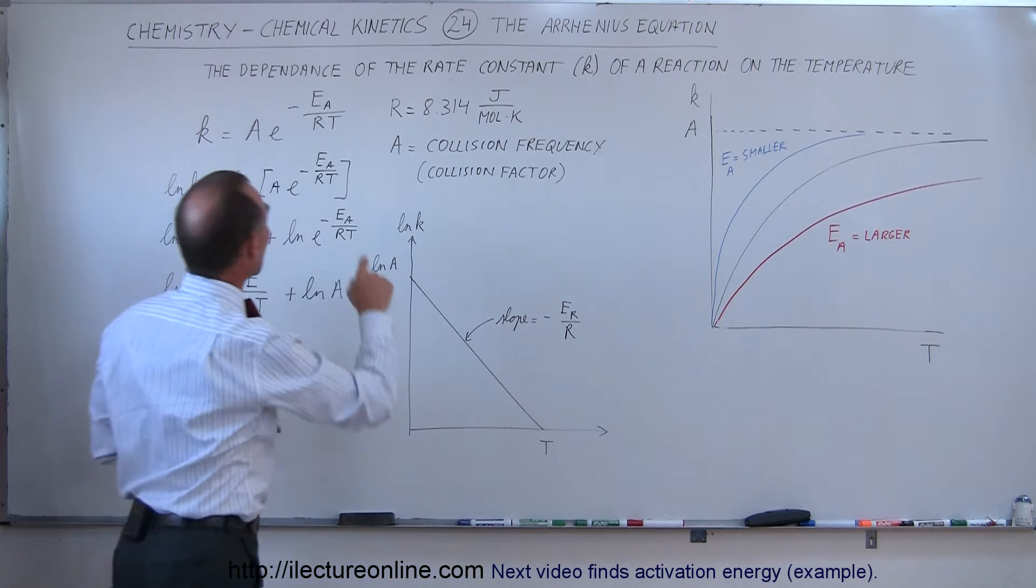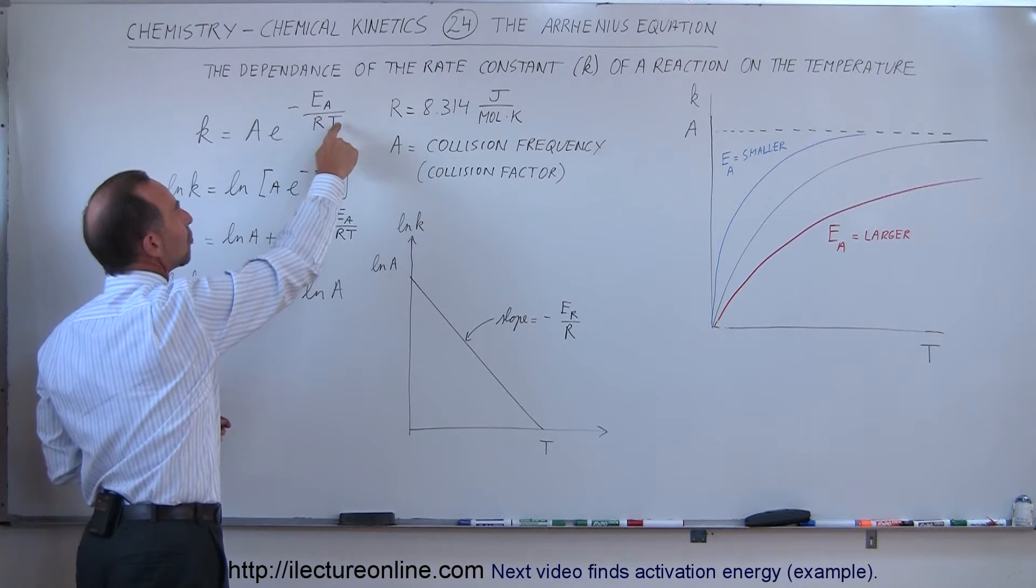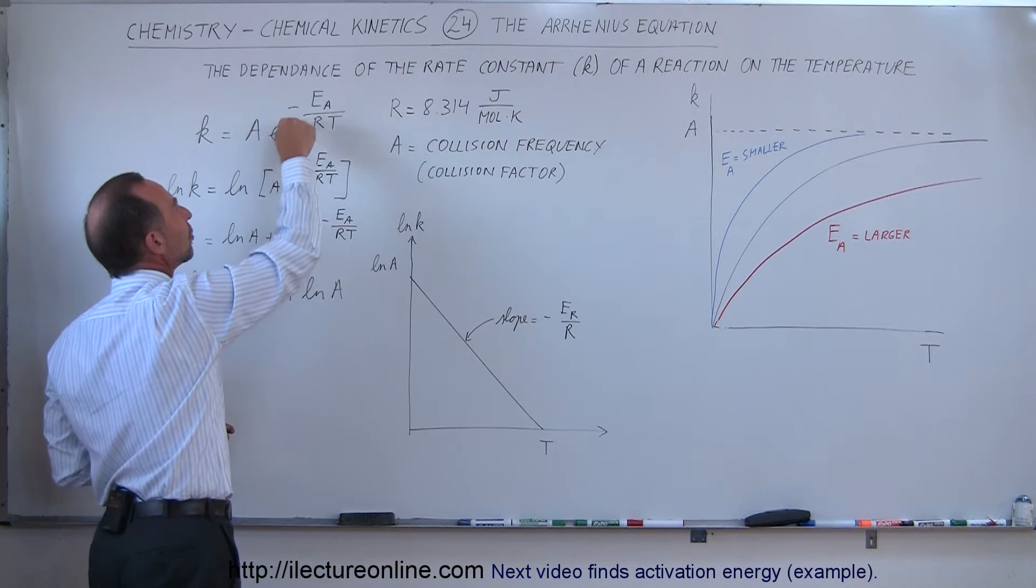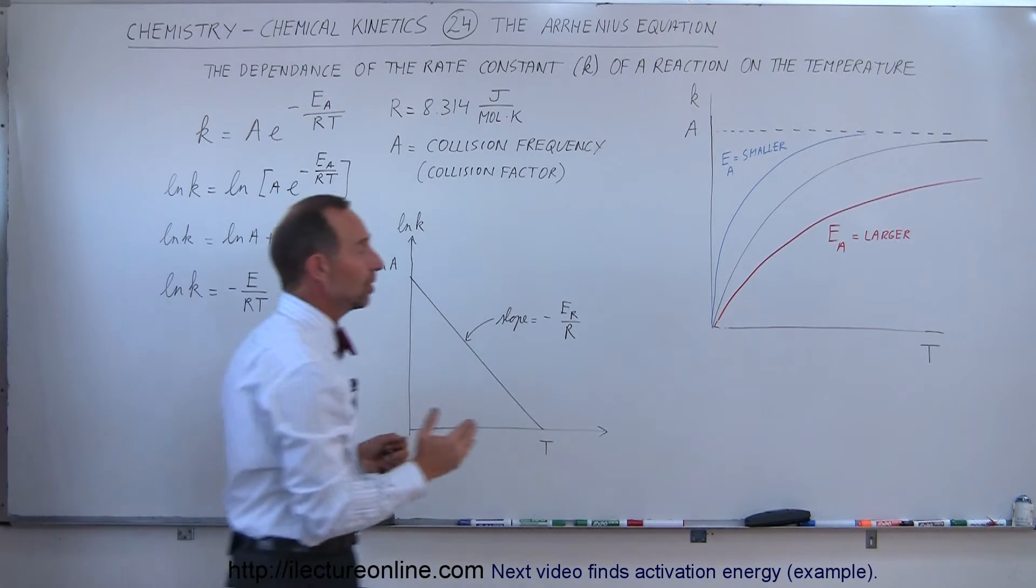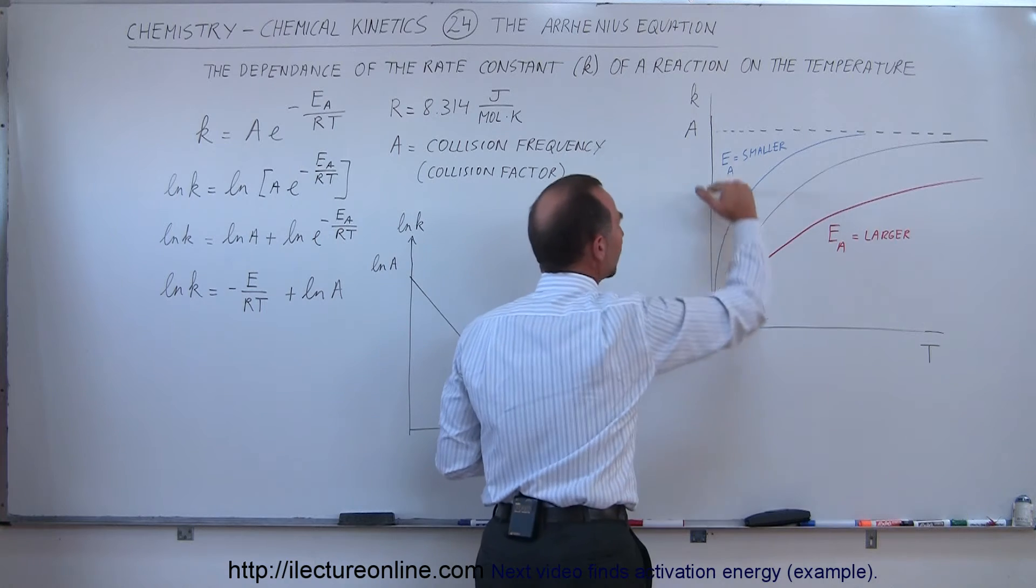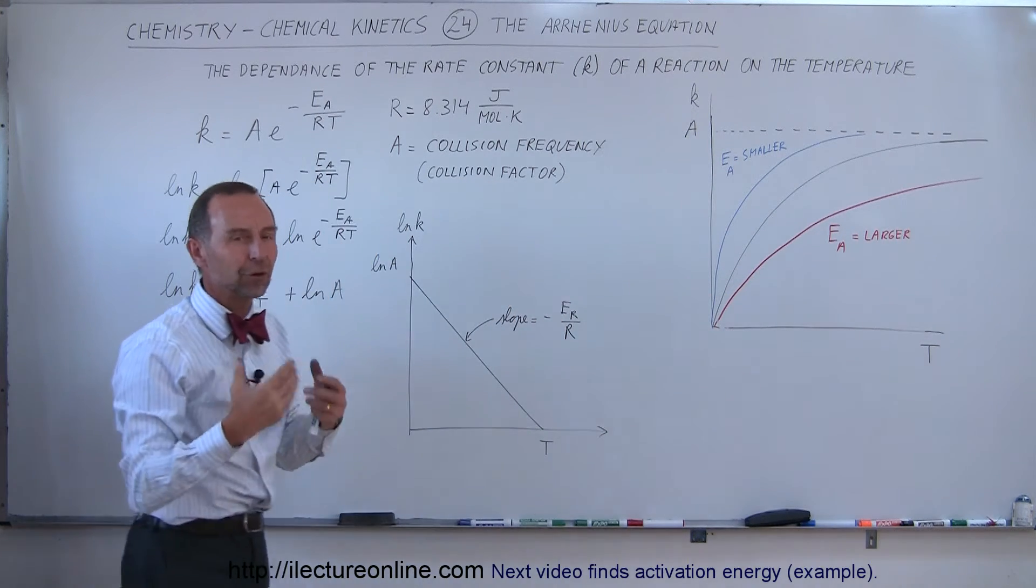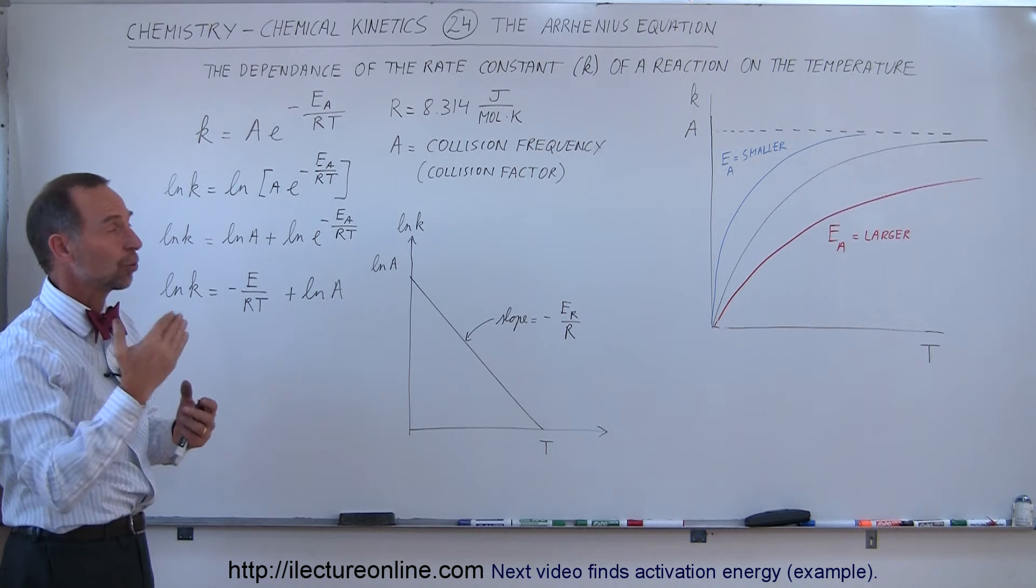If the temperature is very low, then we get a very small number in the denominator which makes this a very large exponent, and e to a minus large exponent goes to zero. So as the temperature goes to zero, the rate constant goes to zero as well. So the reaction will virtually not take place if the temperature is low.